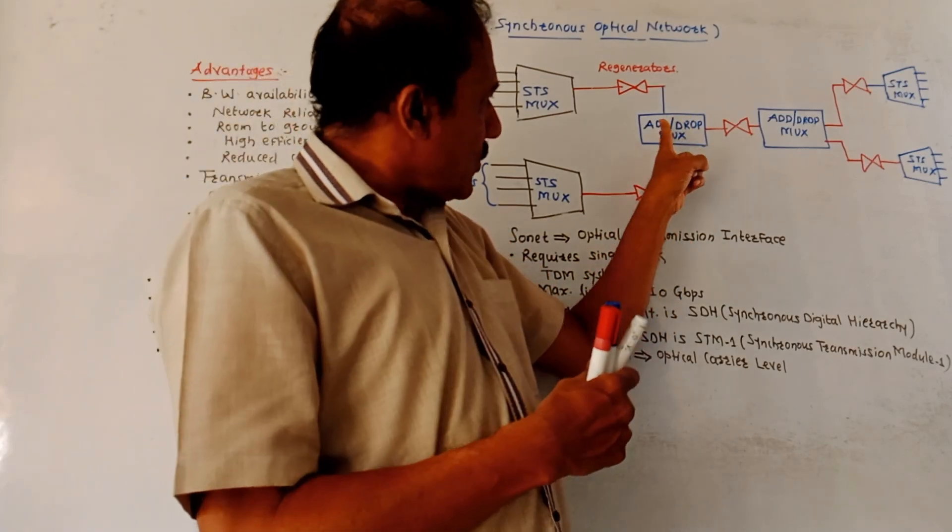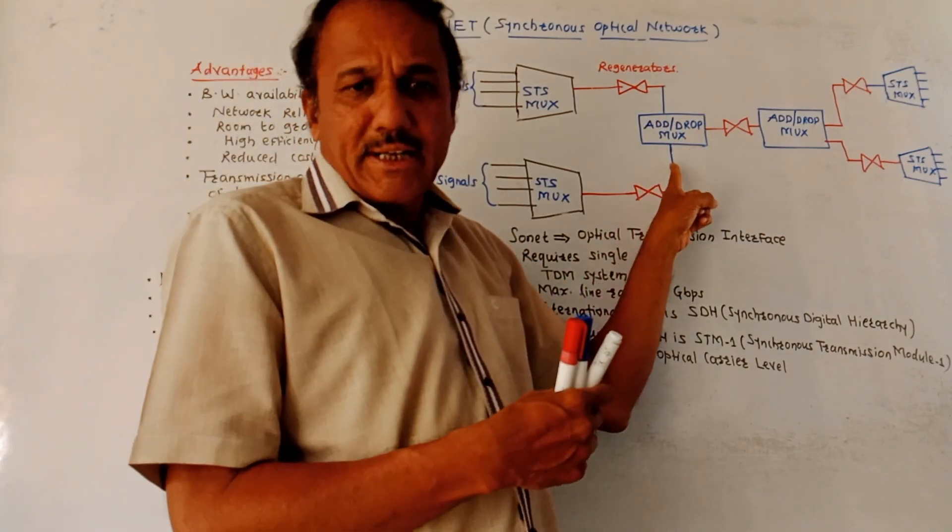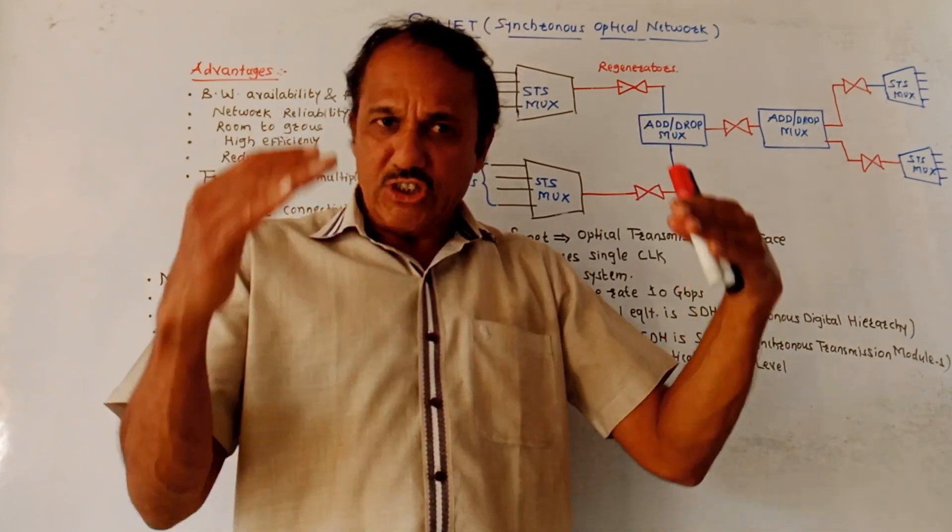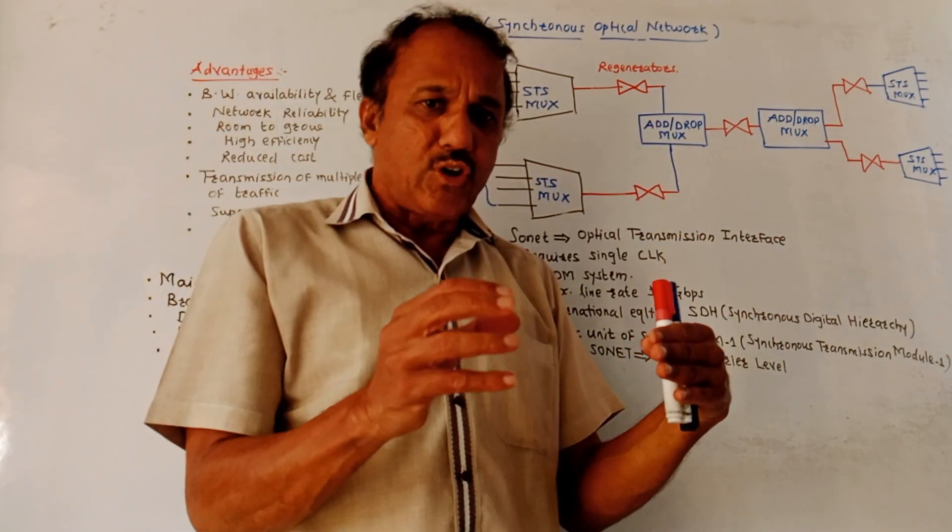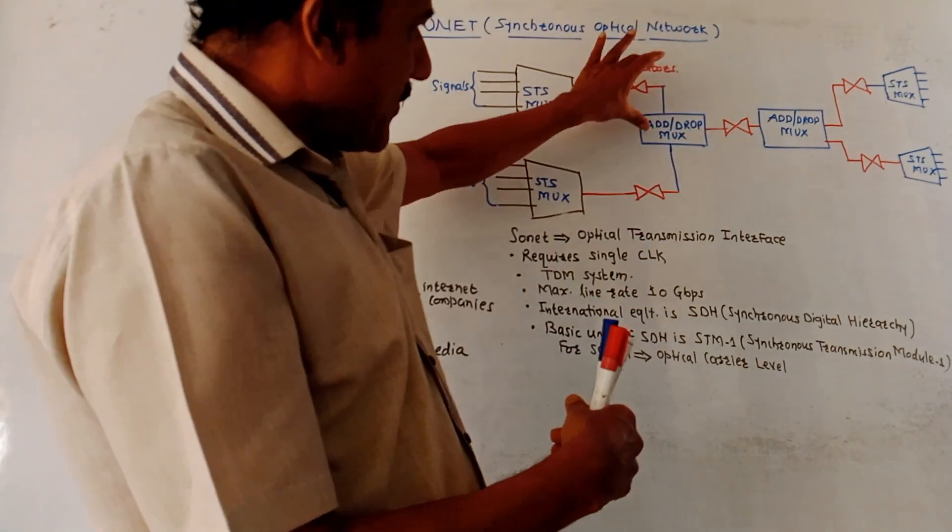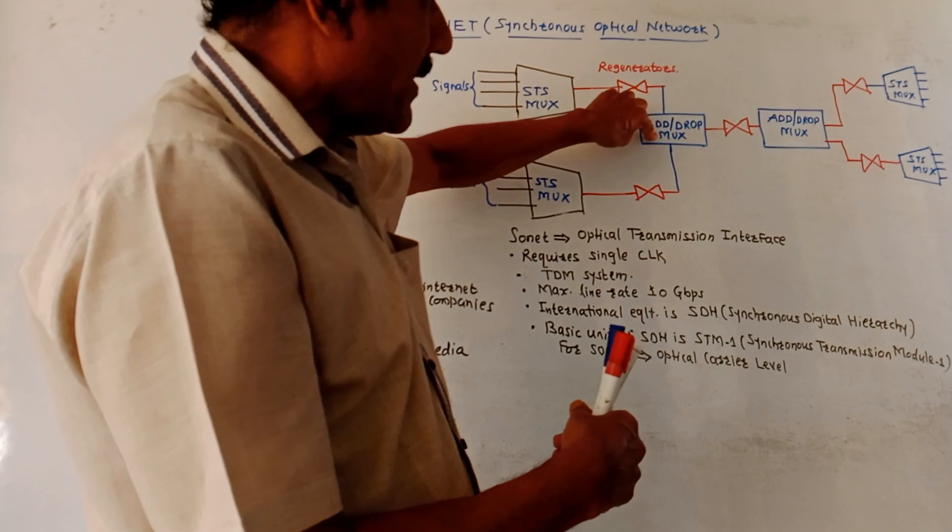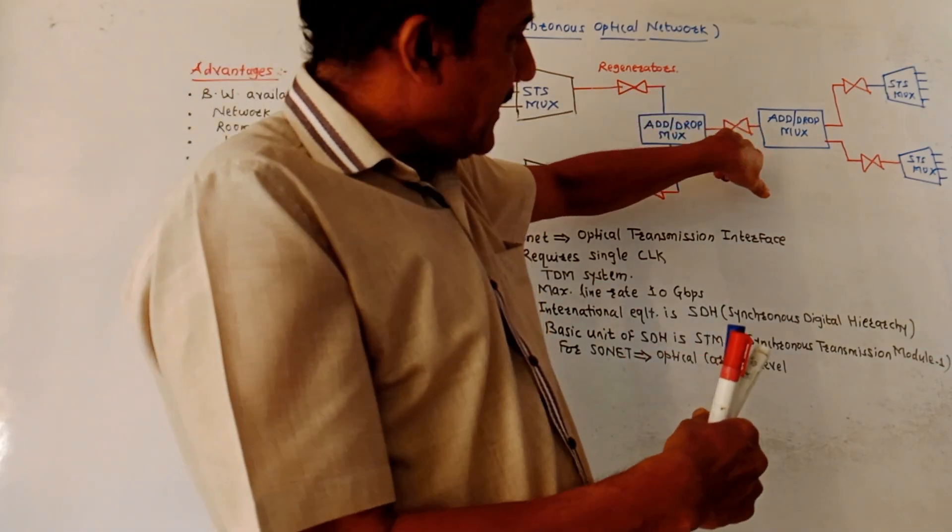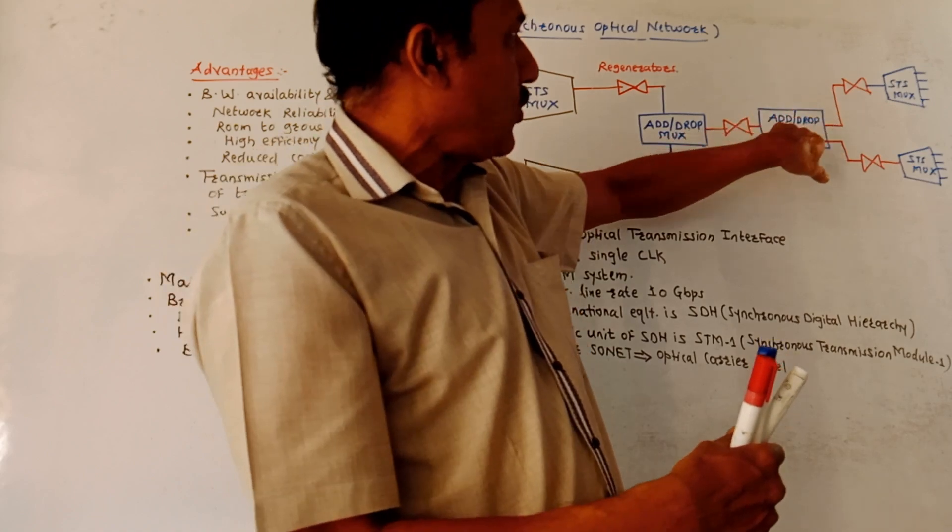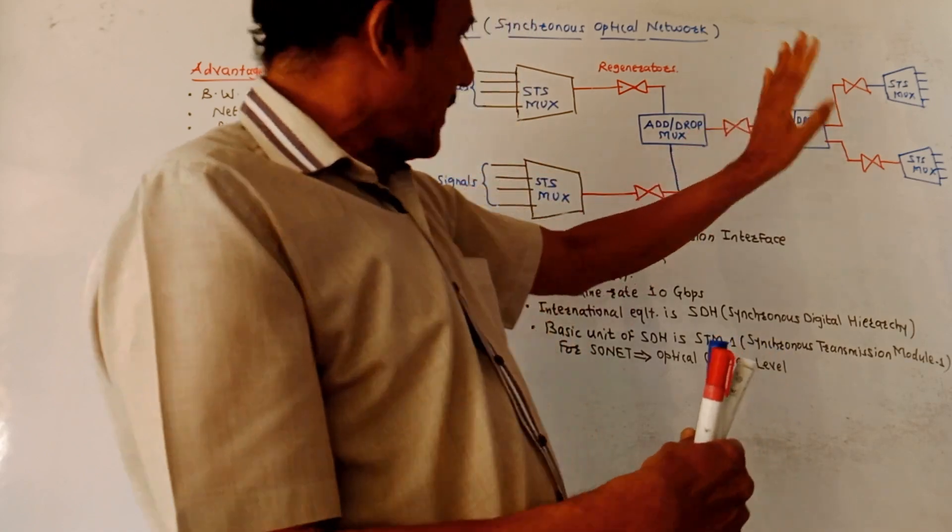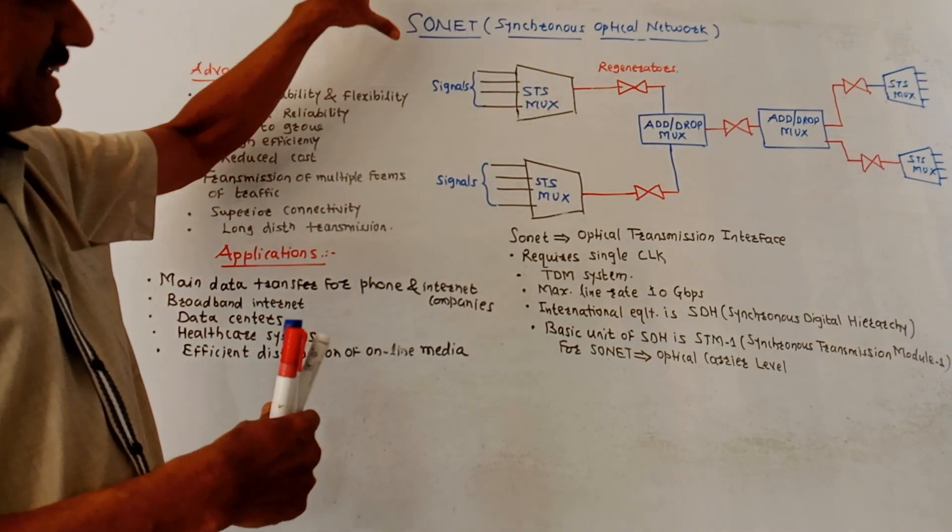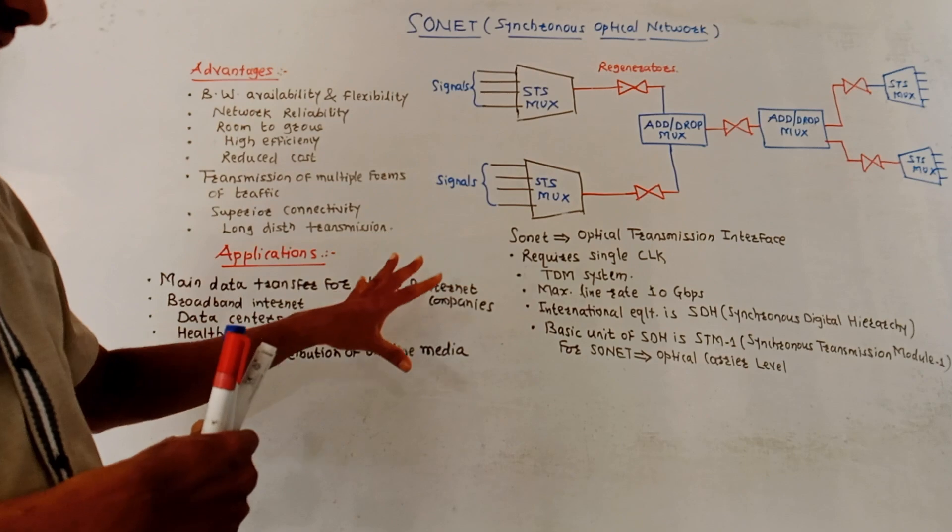Then we have shown add or drop multiplexer. We have discussed this concept many times. In certain applications, it is required to add a particular wavelength or it is required to drop a particular wavelength. This is the function done by add or drop multiplexer. Again, this is regenerator. At the other end, we are again using same block, add or drop multiplexer, and the things repeat. This is the general block schematic of the SONET, that is synchronous optical network.